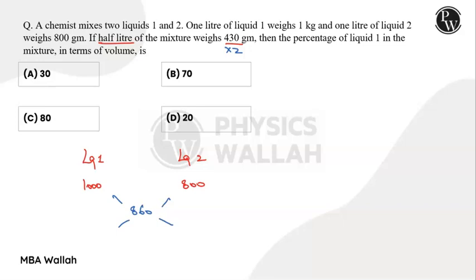Applying the allegation method here: 860 minus 800 equals 60, and 1000 minus 860 equals 140.